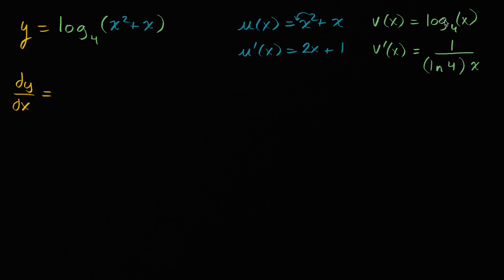If v of x was just natural log of x, our derivative would be one over x. But since it's log base four, and this comes straight out of the change of base formulas that you might have seen, we just scale it in the denominator with this natural log of four. Or you could think of scaling the whole expression by one over the natural log of four.